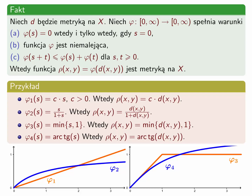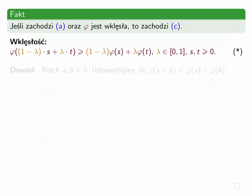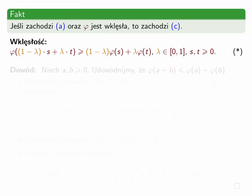Jeśli spełniony jest warunek a, czyli φ(s) = 0 wtedy i tylko wtedy, gdy s = 0, to musimy sprawdzić warunki a, b i c. Jedynie warunek c — subaddytywność — może budzić wątpliwości. Proszę zauważyć, że wszystkie funkcje φ1 do φ4 są wklęsłe. Okazuje się, że zamiast sprawdzać subaddytywność funkcji φ, można sprawdzać jej wklęsłość: jeśli φ(0) = 0 i φ jest wklęsła, to zachodzi subaddytywność.